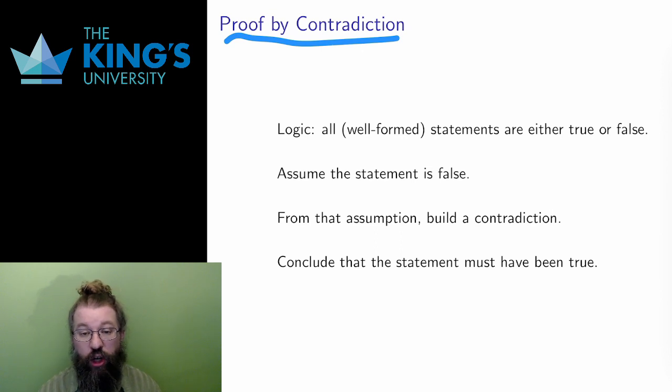Proof by contradiction relies on the logical fact that any reasonable formal statement is either true or false. In logic, this is called the law of the excluded middle. Therefore, if I have a mathematical claim, it should be either true or false.